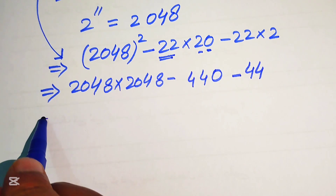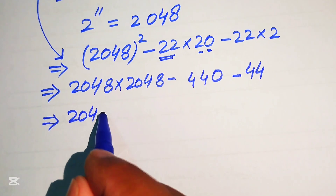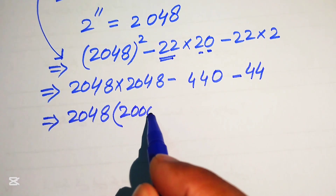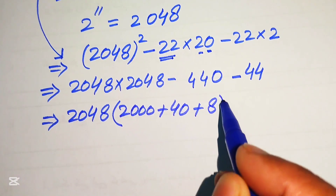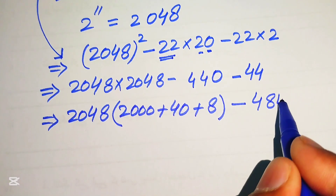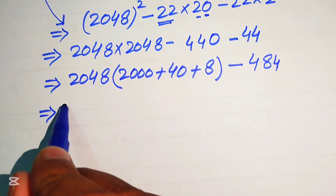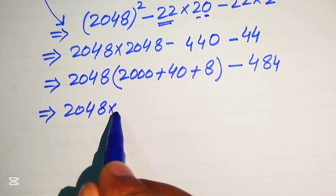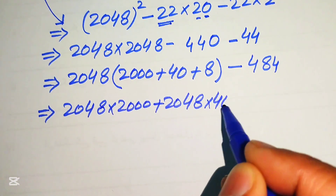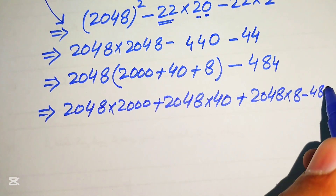Now we need further simplification. We write 2048 squared as 2048 multiplied by 2048. We break 2048 as 2000 plus 40 plus 8. Also, 440 minus 44 equals 484. So the expression becomes 2048 times 2000, plus 2048 times 40, plus 2048 times 8, minus 484.